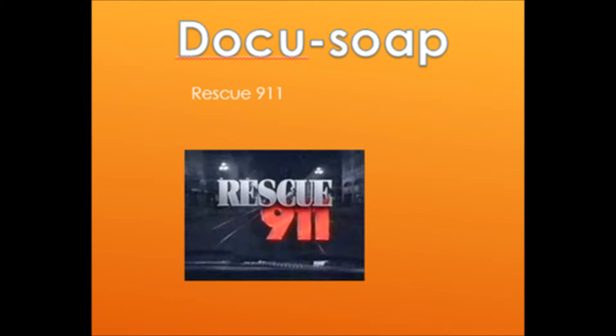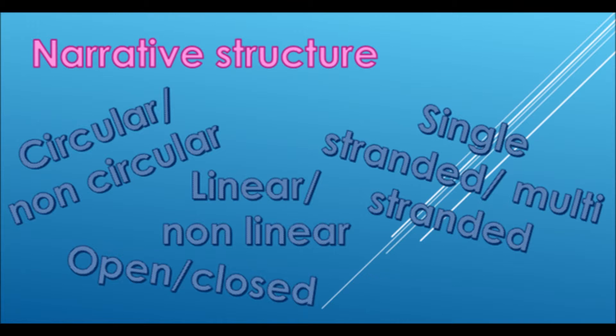Next, I'm going to talk about the narrative structure, which is the way a documentary is structured out. Firstly, it could be open or closed — open doesn't give a definitive ending and closed has a definitive ending. Single stranded is when there is one storyline within the documentary, while multi-stranded has more than one storyline, for example a soap.